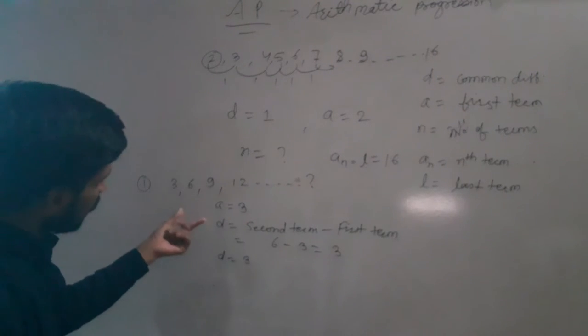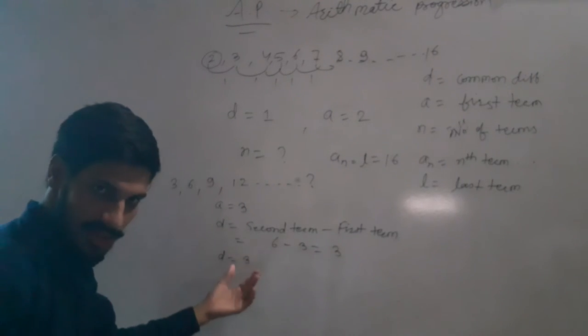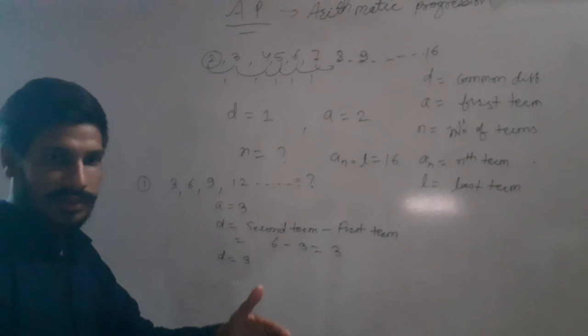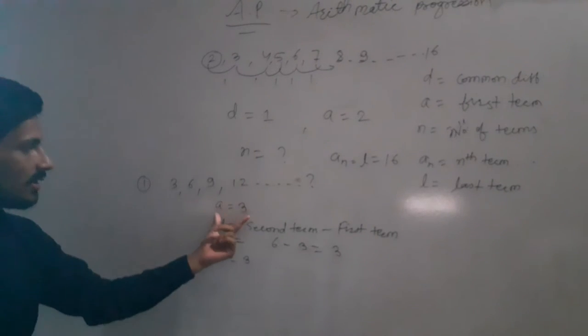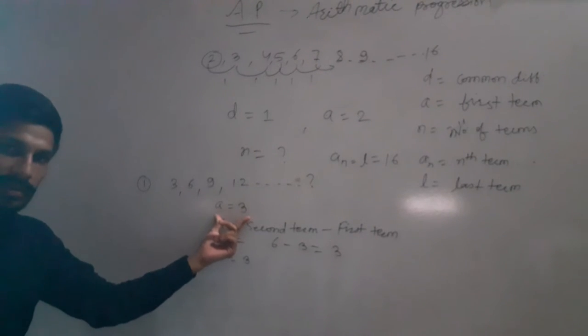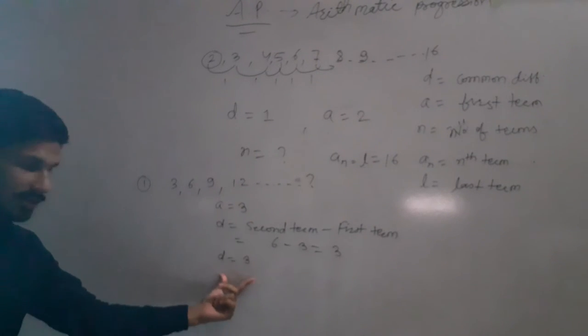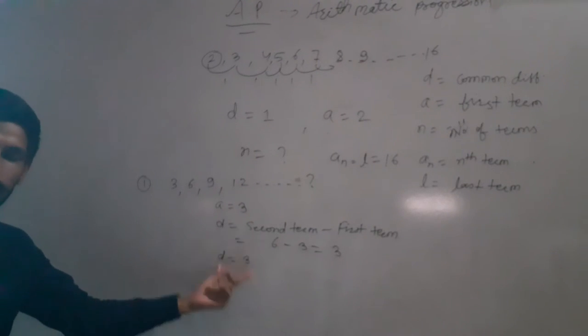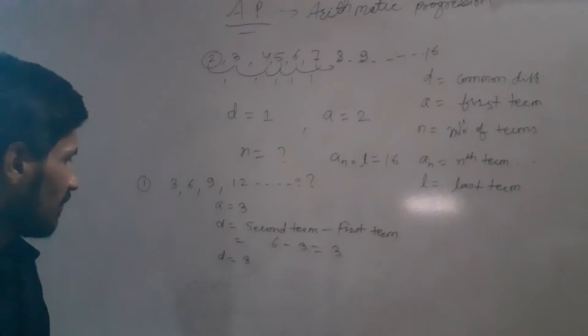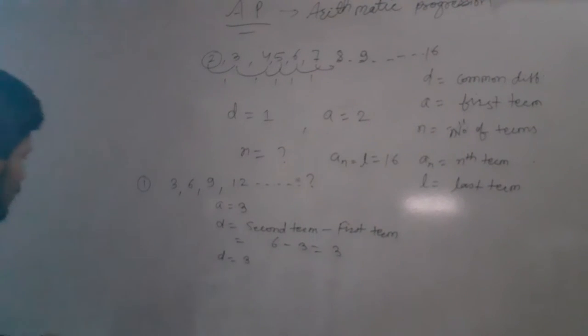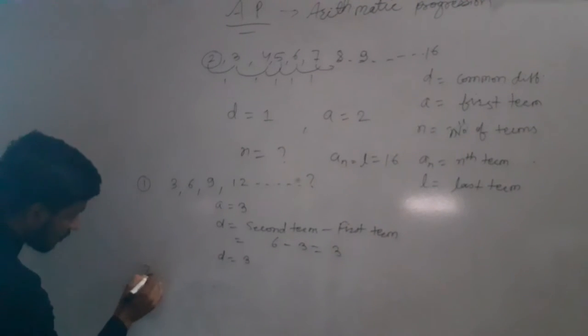Two types of questions are asked in Exercise 5.1: the first is to find the first term A, and the second is to find the common difference D.